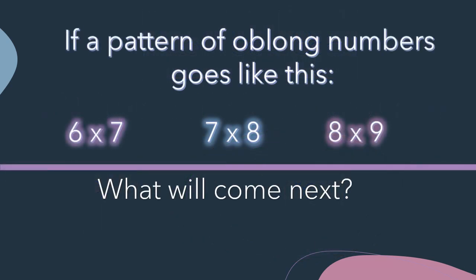If a pattern of oblong numbers goes like this: six times seven, seven times eight, eight times nine. What will come next?